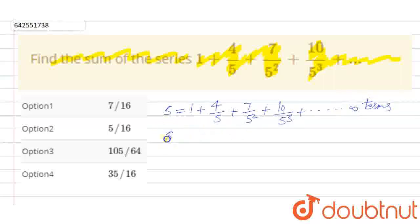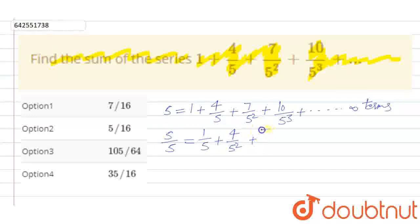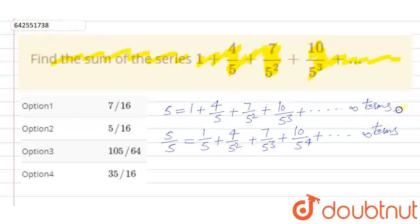Now, we can divide by 5 on both sides. This becomes S/5 = 1/5 + 4/5² + 7/5³ + 10/5⁴ and so on, up to infinite terms.